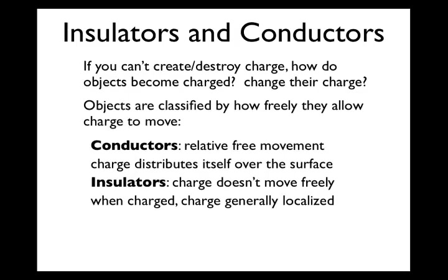Objects get classified by how freely they allow electrical charges — electrons — to move. Conductors are materials that allow relatively free movement of charge. When you put charge on these objects, because like charge repels from other like charges, the charge tends to distribute itself over the surface of a conductor in an attempt to get as far away from other like charges as possible. An insulator, however, is a material where charge doesn't move freely when it's charged, and the charge is generally localized — it stays wherever it was placed initially.